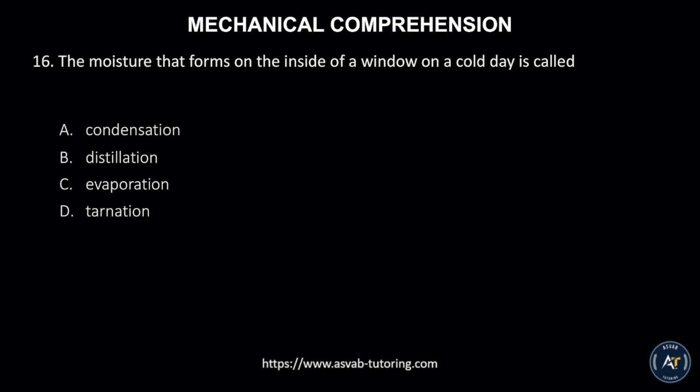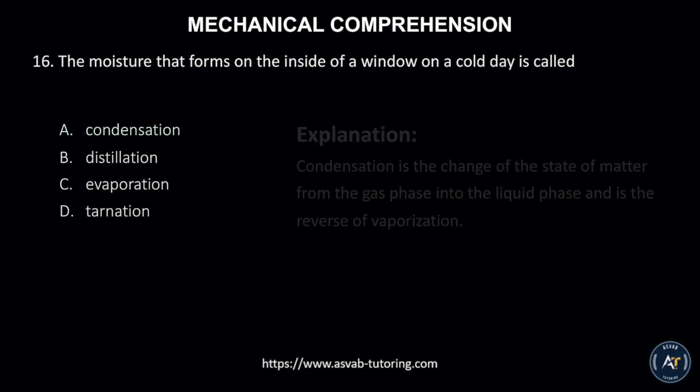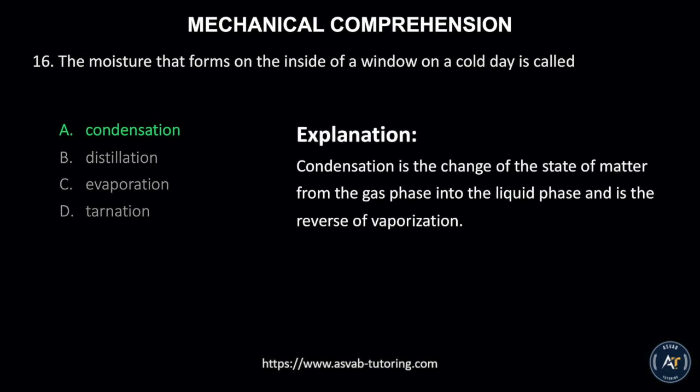Number 16. The moisture that forms on the inside of a window on a cold day is called? A. Condensation, B. Distillation, C. Evaporation, or D. Tarnation. The correct answer is A. Condensation. This is because condensation is the change of the state of matter from the gas phase into the liquid phase, and is the reverse of vaporization.